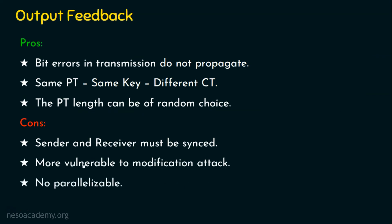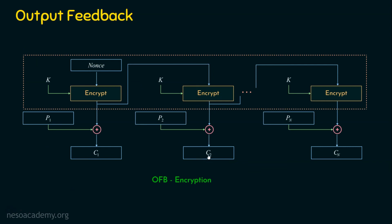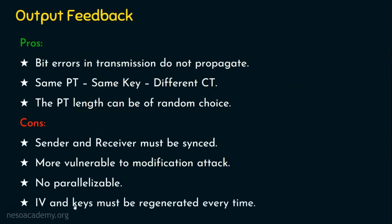The third drawback is that OFB is not parallelizable, because to generate C2 you need the output of the previous block's encryption function — this output is necessary for generating the ciphertext of the next round, creating a sequential dependency. The fourth disadvantage is that the initialization vector nonce and keys must be regenerated every time, which seems like a disadvantage, but as far as security is concerned, it is always good that IVs and keys are regenerated.